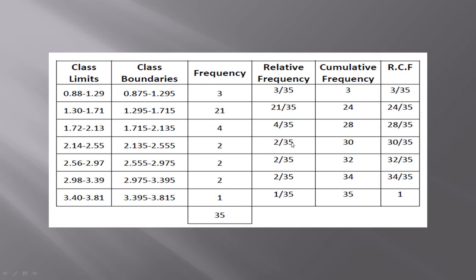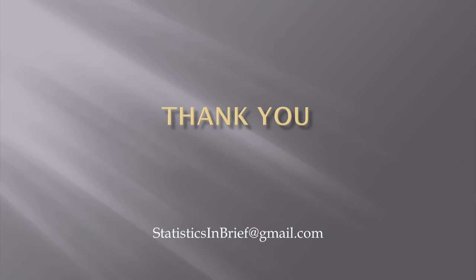For the second class, the cumulative frequency value is 24 and the total frequency value is 35, so the RCF value is 24 over 35. We know that for the last class the cumulative frequency equals the total frequency value, therefore the RCF value for the last class is equal to 1. Thank you very much — we'll see you again with a new lesson.